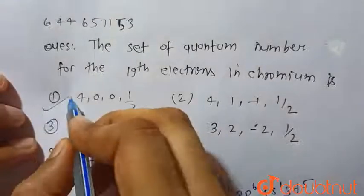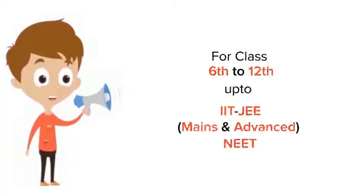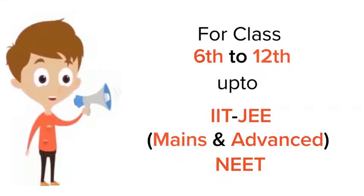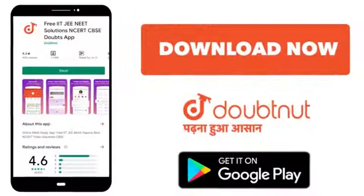Which is given in option number first. Hence, option first is the correct choice. Thank you. For class 6th to 12th, IIT-JEE and NEET level, trusted by more than 5 crore students, download Doubtnut app today.